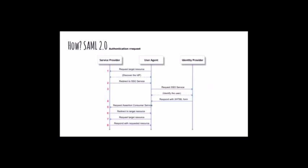This is the basic flow of an authentication request. It's an authentication request protocol, bound to POST, and it's a web SSO profile. Simply put, a user agent says 'I want to see something — can I see this target resource?' At that point, your service provider asks the first question: do we have a valid security context to see this? Is this user logged in or is this information freely available? If the answer is yes, we skip everything else. But we're going to assume the answer is no.